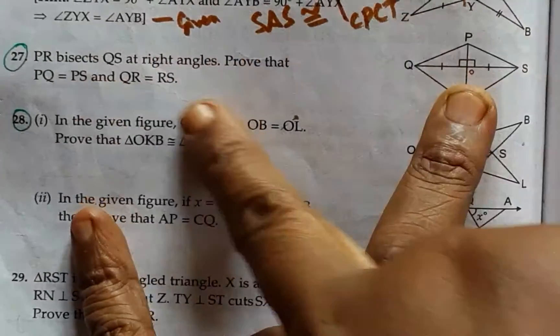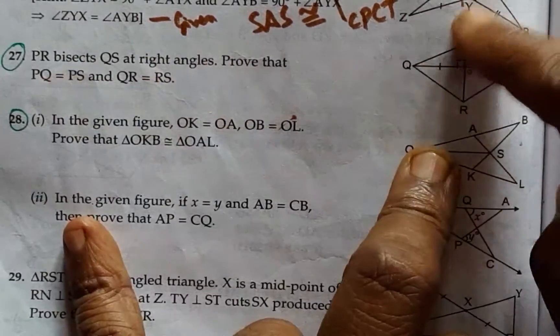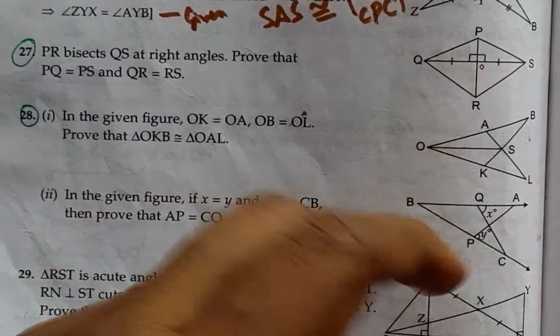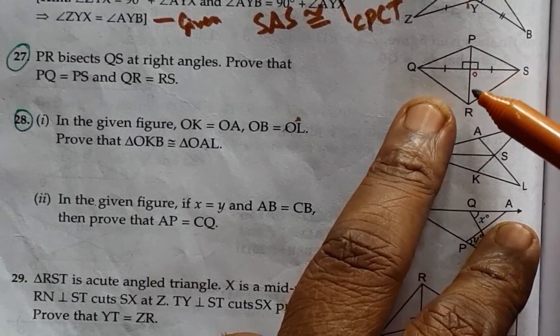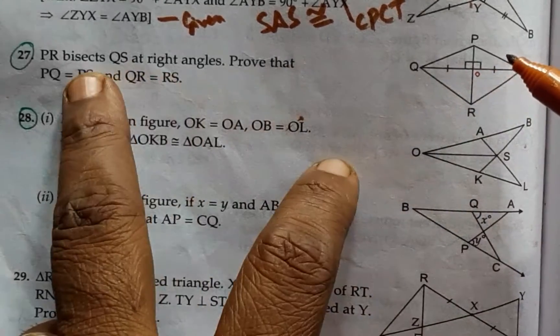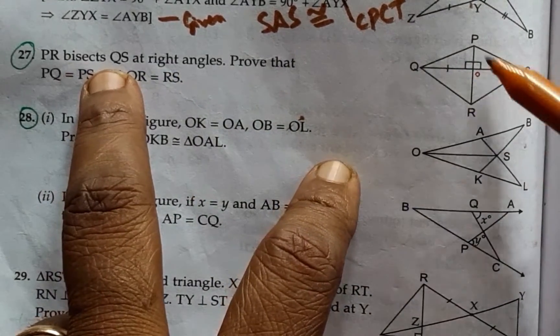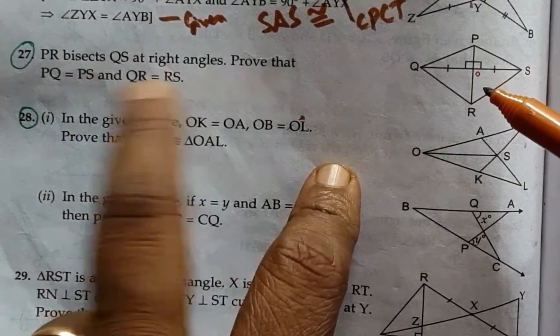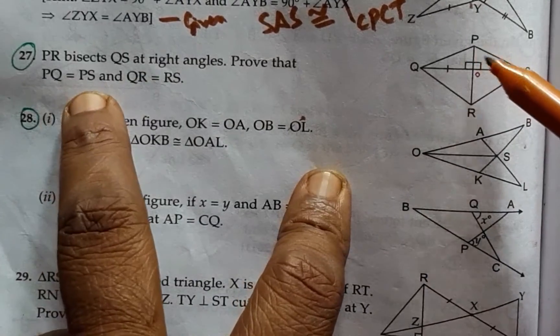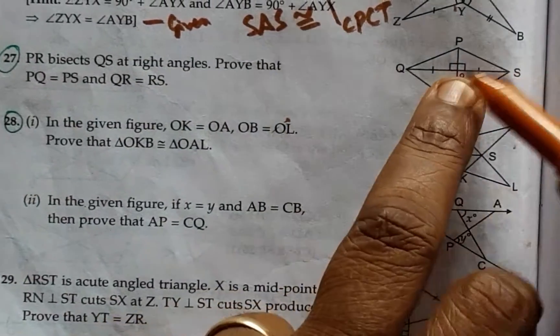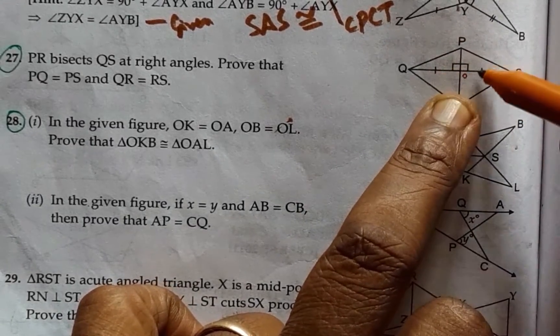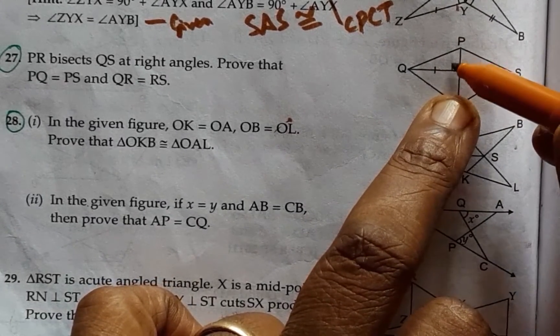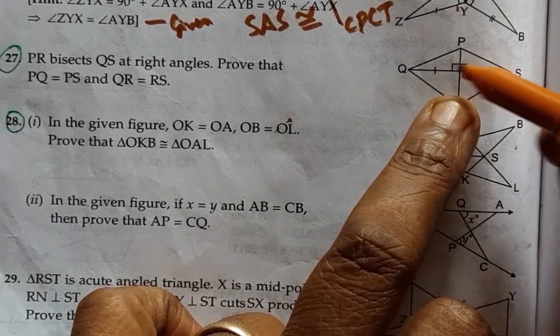This is a very simple question. PR bisects QS. Therefore, if this is 10 centimeters, then this will be 10 centimeters and only QS is being bisected. Now, prove that PQ is equal to PS. Now I will take a congruency for these two things quickly. As you can see, this has been given as equal and this is 90 degrees, 90 degrees.